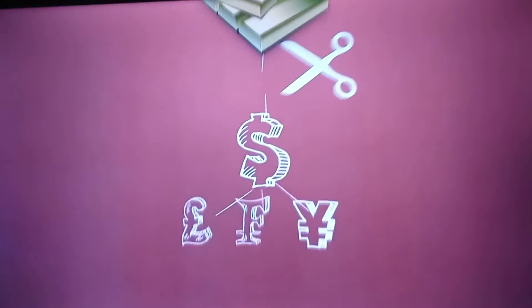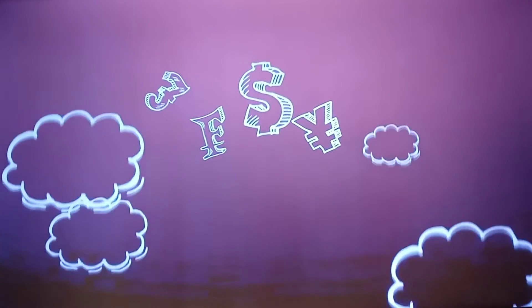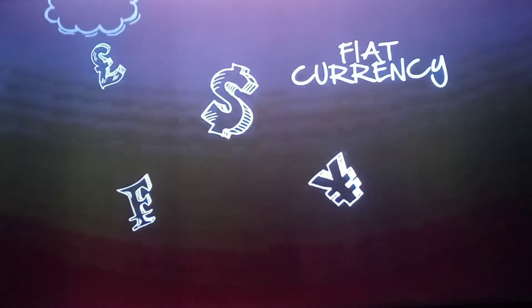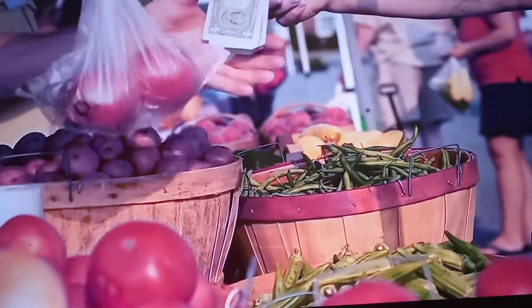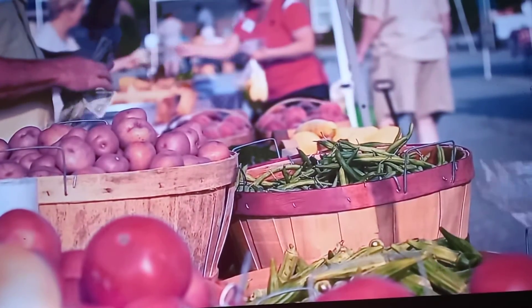By removing the link between gold and the U.S. dollar, President Nixon created a system where all currencies were backed by nothing. This is what is known as a fiat currency. Fiat currency is currency that's backed by nothing except government promises. The word fiat is a Latin word, and it basically means currency that's circulating by force. If people have confidence in that currency, and if there's enough government force, that will enable the currency to circulate for a period of time until people lose confidence in it.